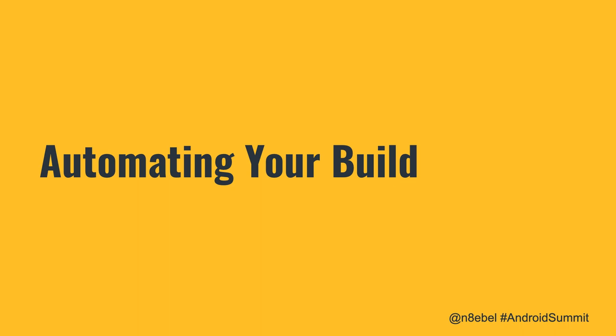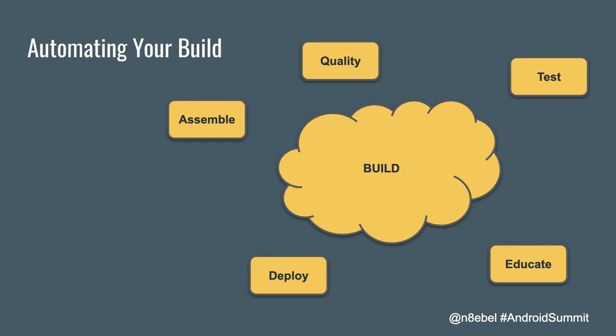To start off, we're going to look at automating your build. The build is kind of at the center of all of this — it can assemble our project, check for quality, run tests, deploy our app, and help educate developers on our team. It can do a lot, but before we can do all of those things, we really need to have that build set up.